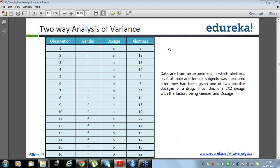Let's say you have this matrix where the gender, dosage, alertness are there. We have 16 observations of each.